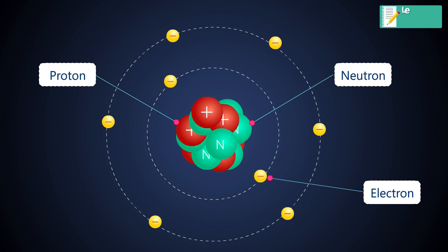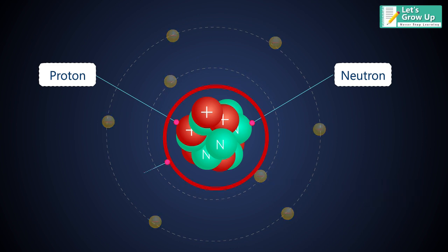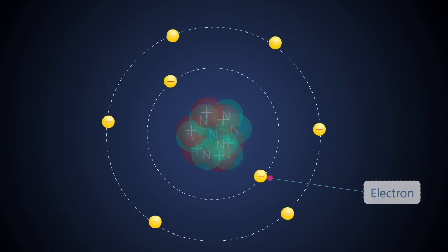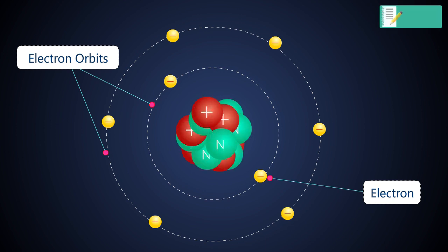Atom is composed of two regions. One is the nucleus which is in the center of the atom and contains protons and neutrons. The outer region of the atom holds its electrons in orbit around the nucleus.